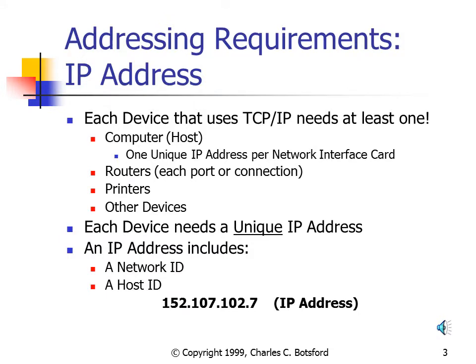Each device on the network that uses TCP/IP to communicate needs at least one unique IP Address. That device could be a computer — sometimes we call these devices hosts — but it doesn't matter if it's a big computer like a mainframe or a small computer like a PC, it will need one unique IP Address per network interface card. Routers also need IP Addresses, generally more than one. Each connection or port on the router would have a unique IP Address. Printers and other devices would also have IP Addresses.